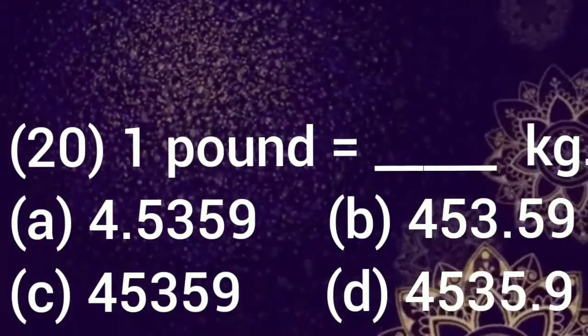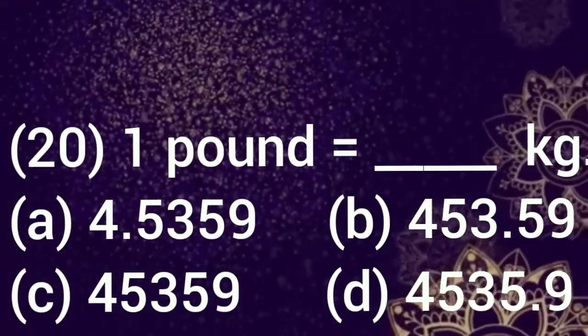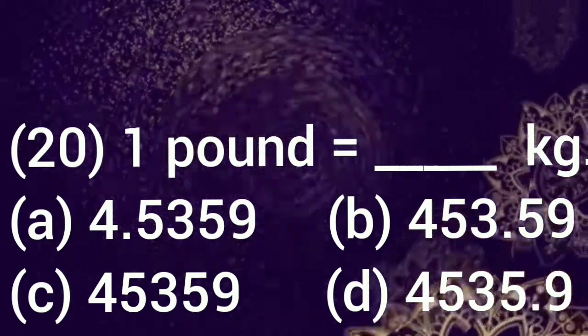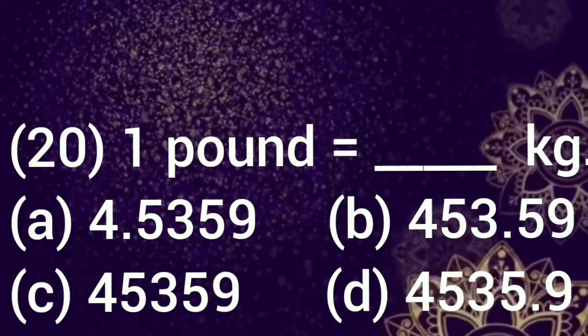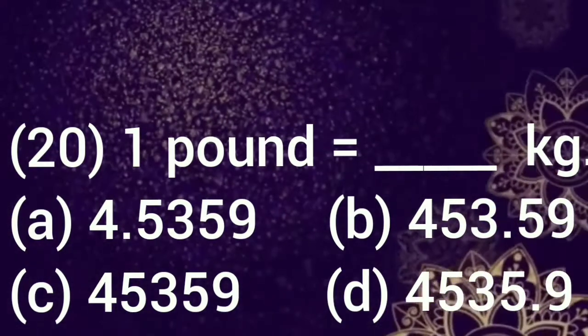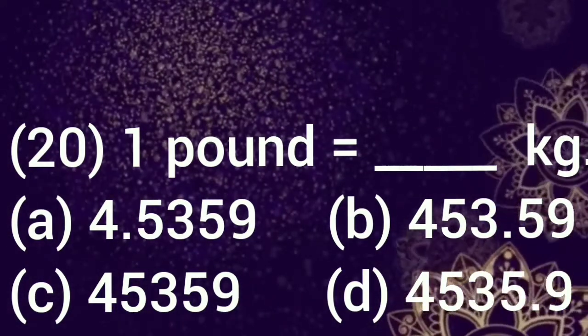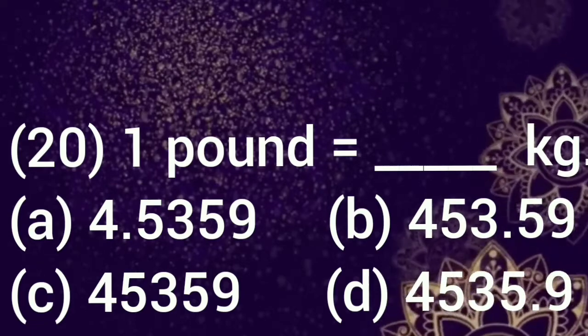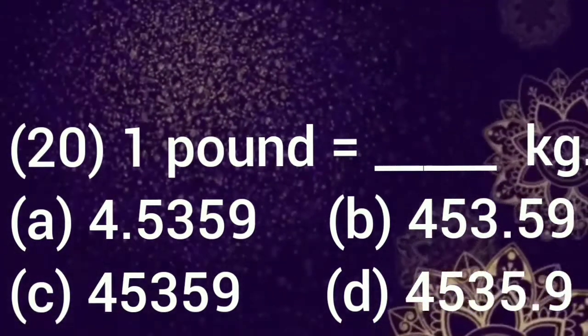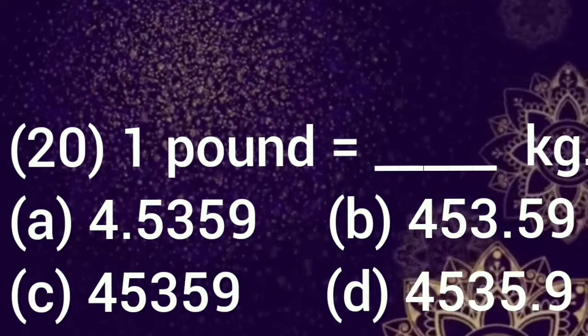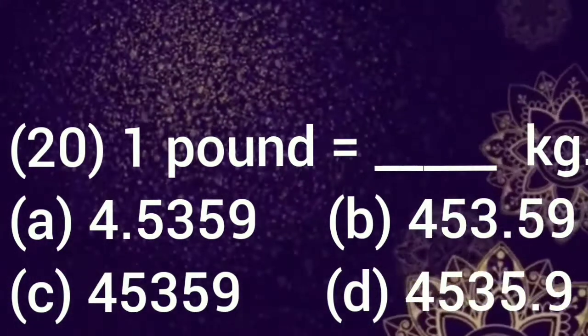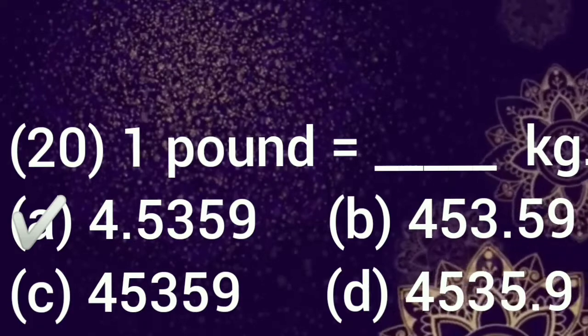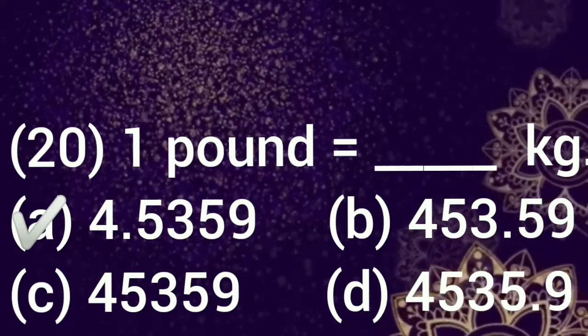For the last question, that is question number 20: One pound is equal to dash kg. Option a: 0.45359, b: 453.59, c: 45359, d: 4535.9. Correct option is a, 0.45359 kg.